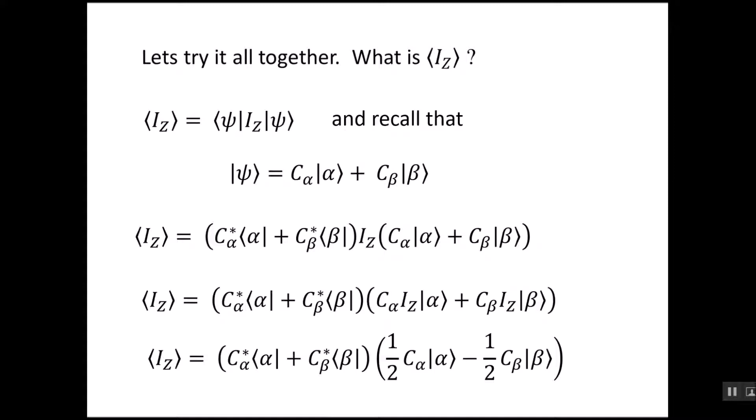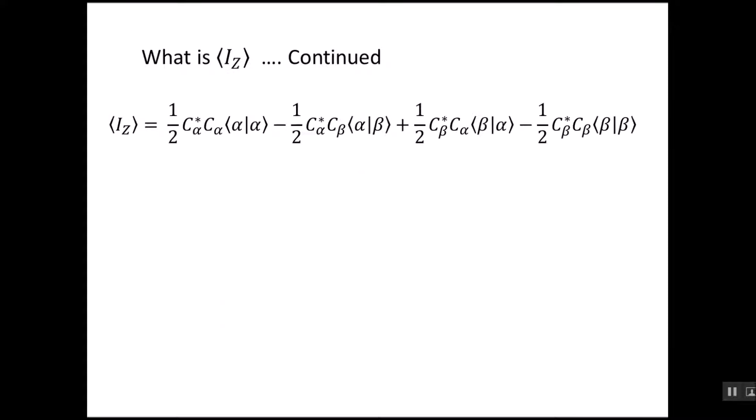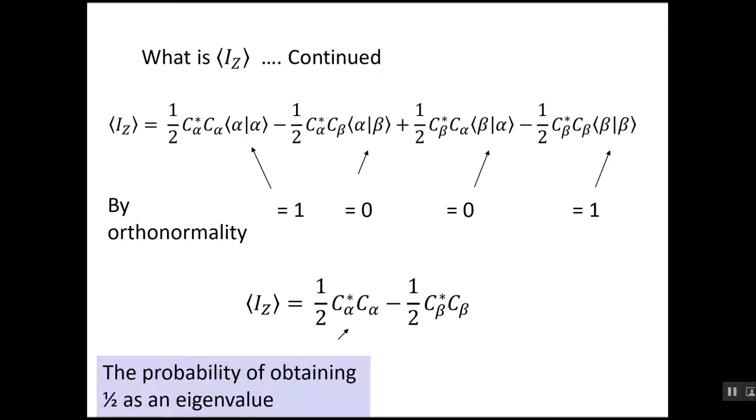The term on the left is one half C alpha alpha minus one half C beta beta. Now we have this four term expression and we can just multiply it out, just like using the FOIL method, and get four terms. If you look at these carefully and remember this idea of orthogonality or normality, we can say two of the terms are equal to one when we integrate them over all space and two are equal to zero. Two are normalized and two are orthogonal. So we can knock out the zero terms. And it tells us that IZ is one half C alpha star C alpha minus a half C beta star C beta. We interpret this as the first term C alpha star alpha is the probability that we're going to obtain one half as an eigenvalue, and likewise for the C beta star C beta term, that's the probability of obtaining minus a half as an eigenvalue.